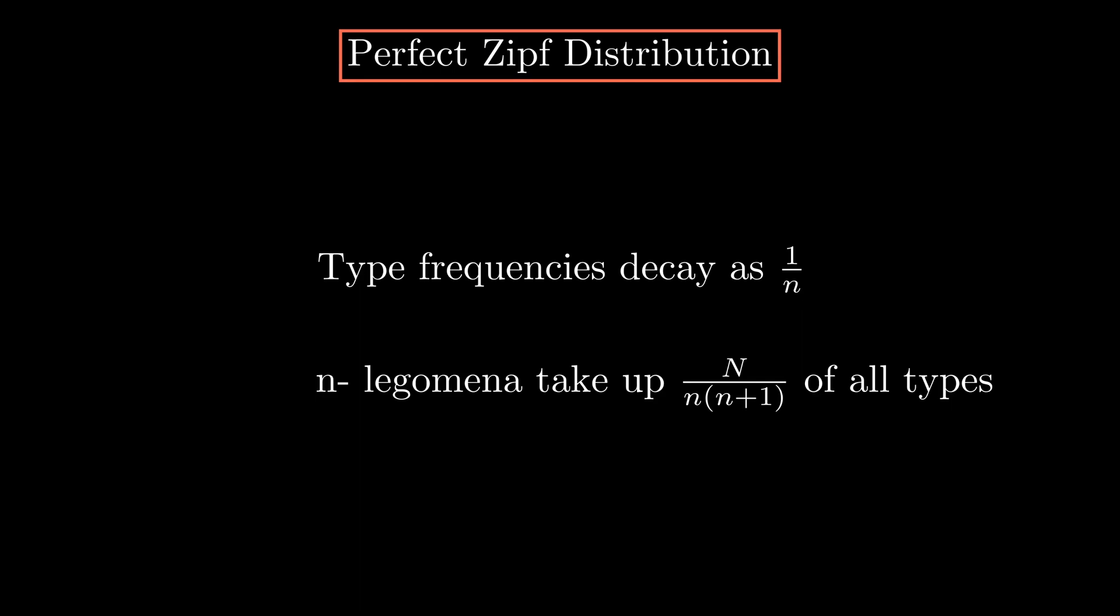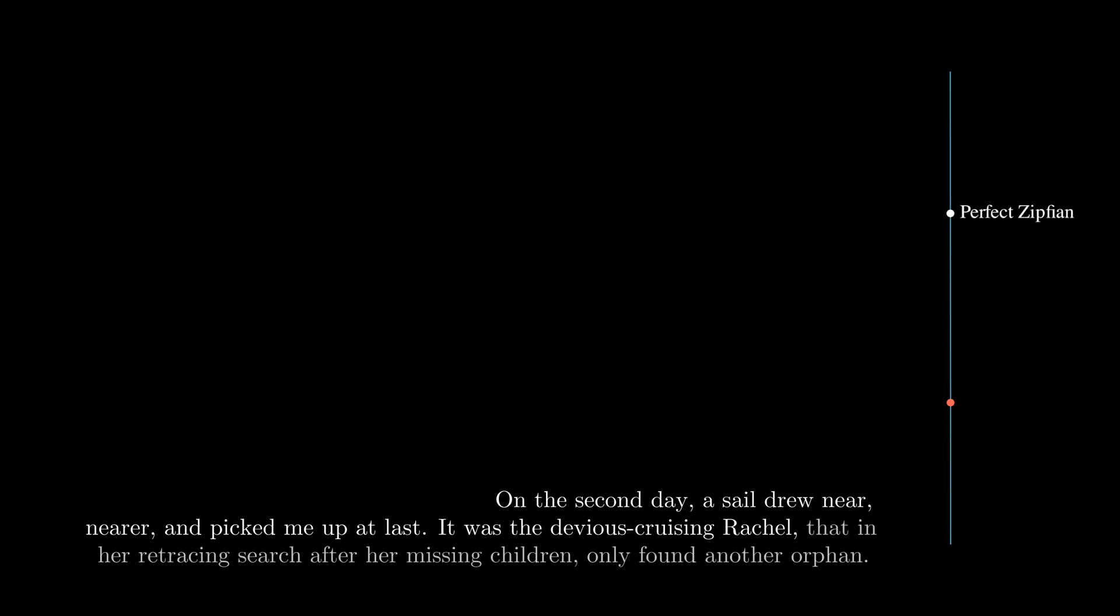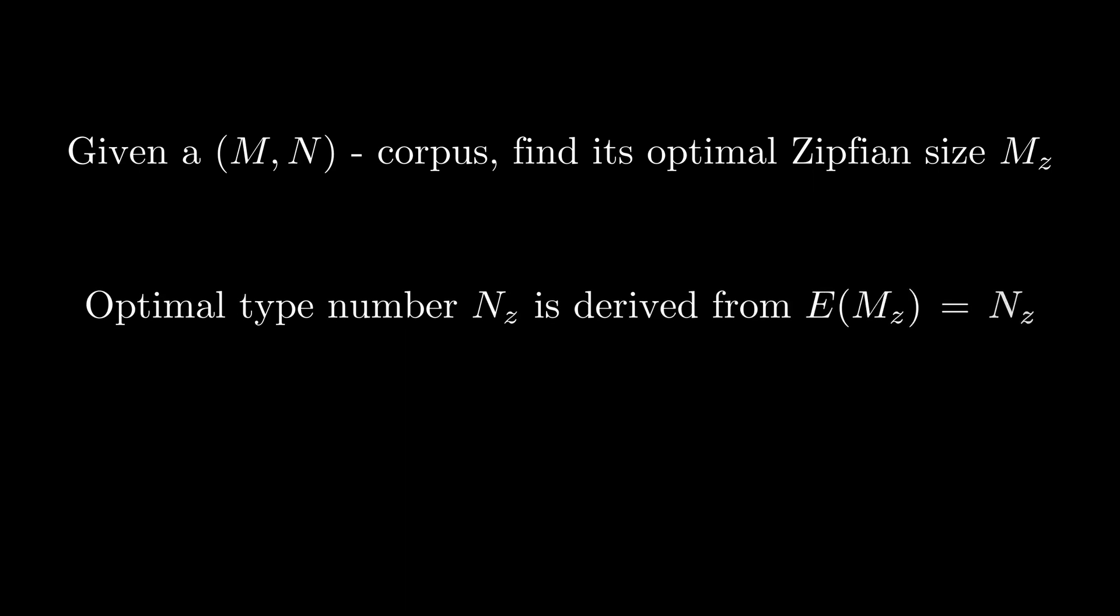Unfortunately, we can't expect this property from all real texts. The general formula we derived works best on perfect Zipfian corpuses. But to make it perform well in all other cases, we need to pretend as if it is perfectly Zipfian. Given a particular text, we can measure how Zipfian it is, and then we either make it smaller or larger, up to a point when it is perfectly Zipfian. Finding the correct size will also yield the theoretically optimal number of types by using this boundary condition.